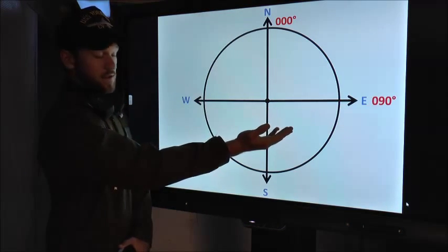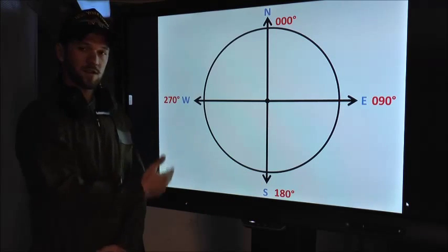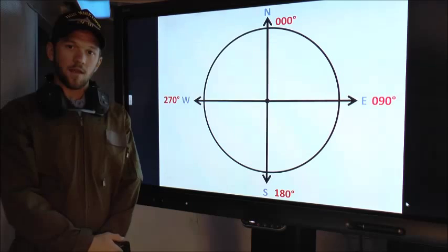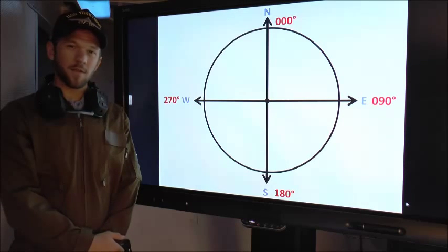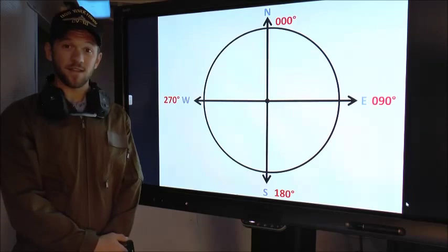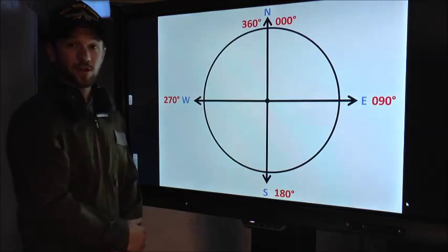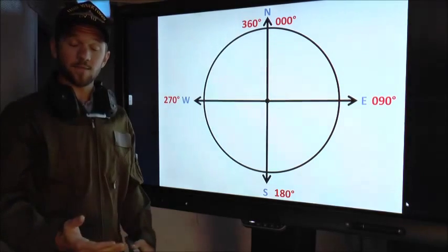All the way at the bottom, south is 180, and west is 270. Now let me ask you another question. How many degrees are in a circle? That's right, 360. So north is both zero degrees and 360 degrees. Now that's important.